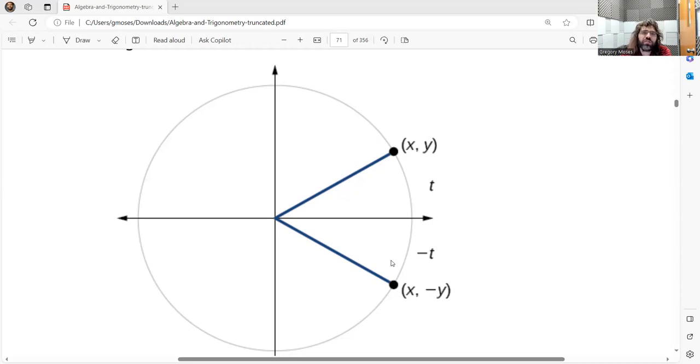So, the x-coordinates being the same is why the cosine of t is the cosine of negative t, and the y-coordinates being the same, except for a negative, is why the sine of negative t is negative the sine of positive t.